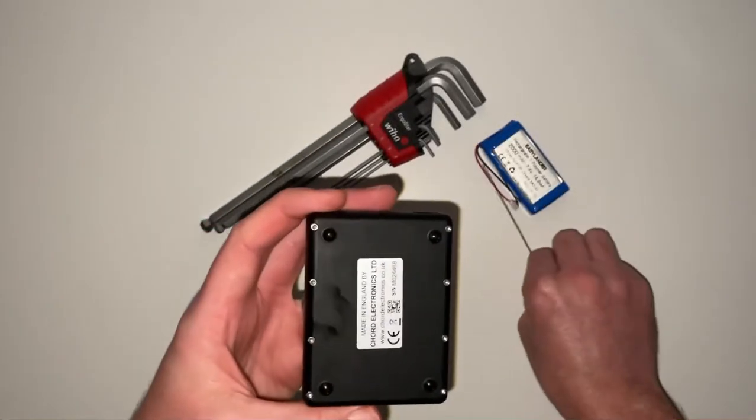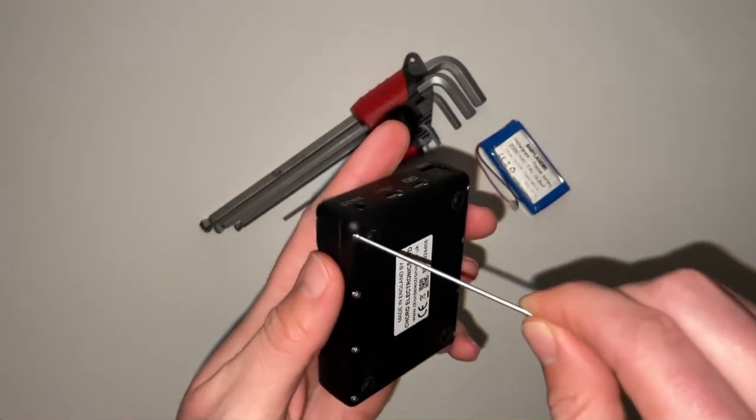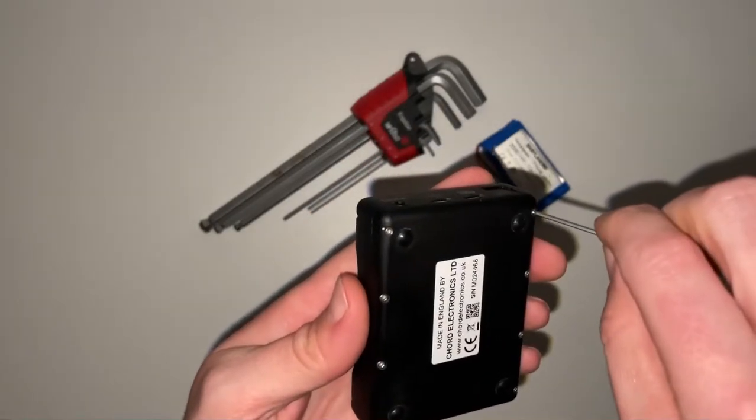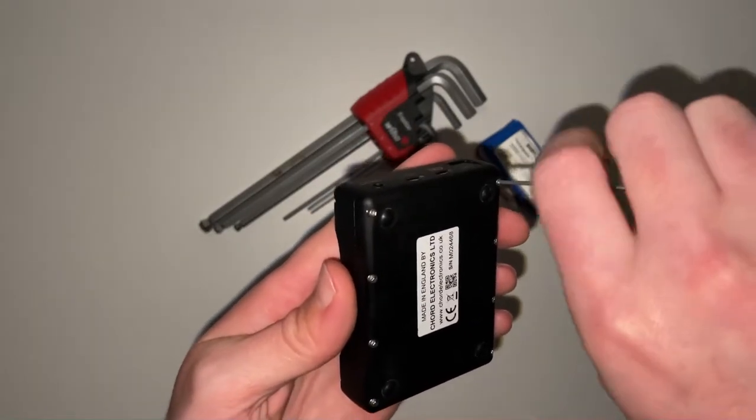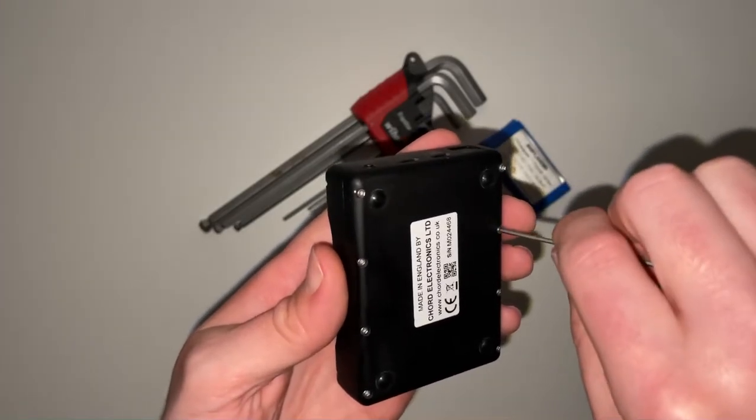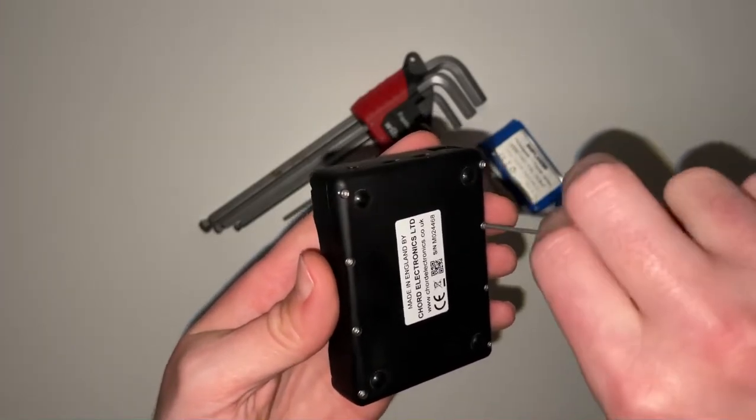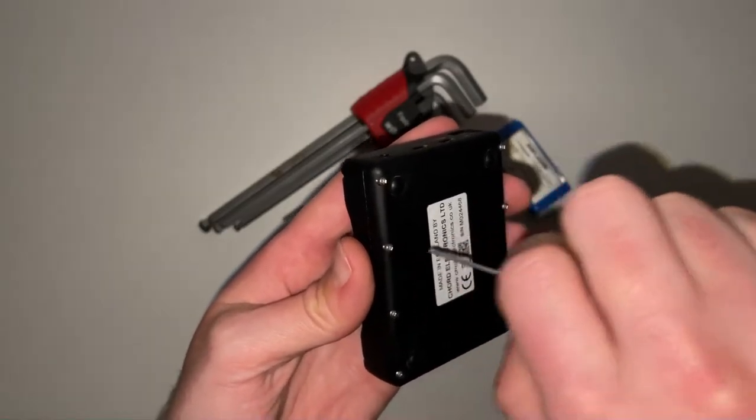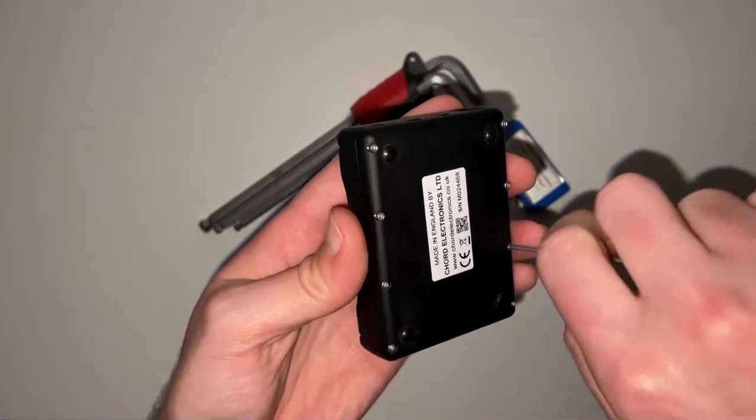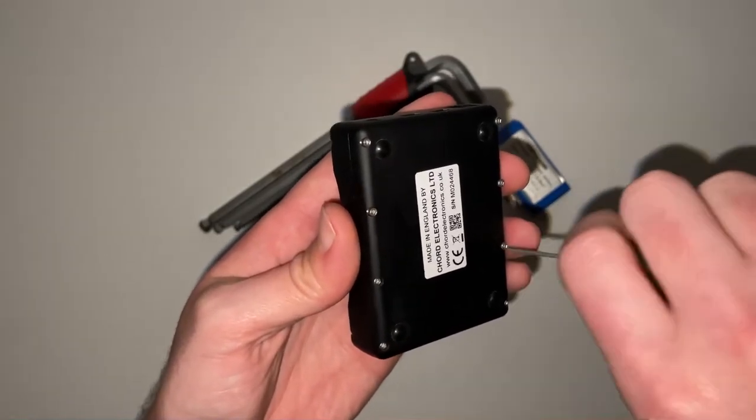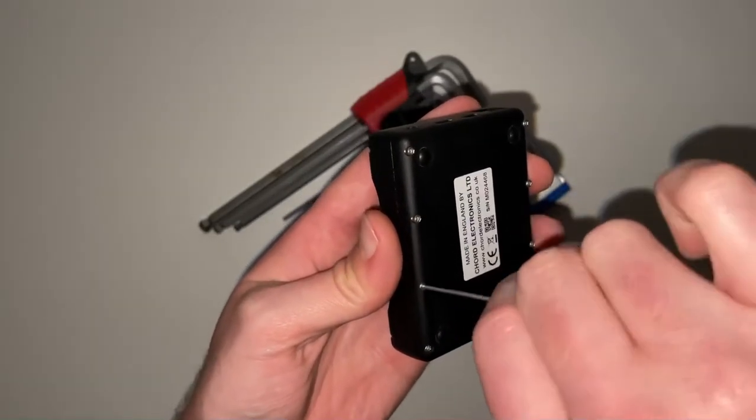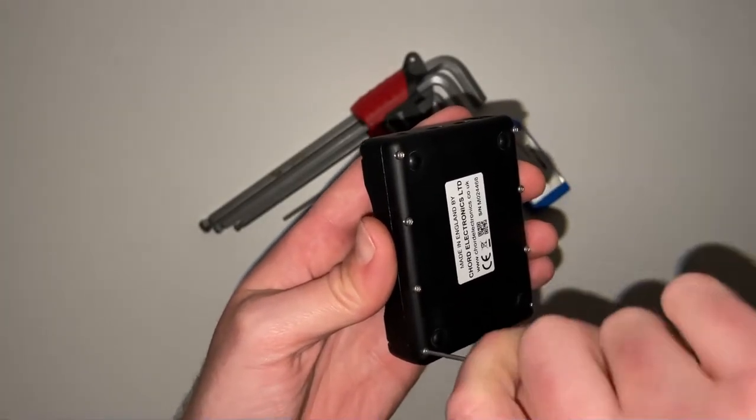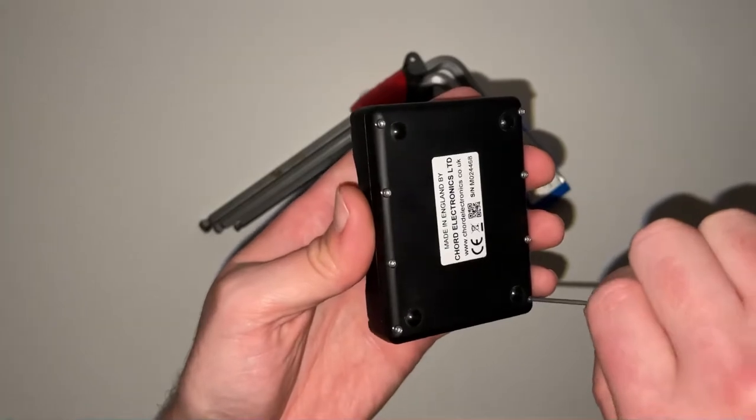We turn it upside down and you can see there are eight socket head hex screws, so we can just spin these out quite easily. They're not held very tight. There's enough of them over a small surface area that the clamping force can be spread amongst them.